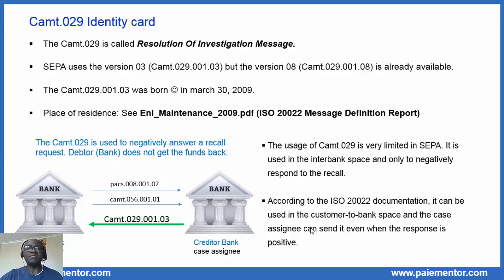In SEPA, the CAM-29 is a message exchanged in the interbank space, either between two banks or between a bank and a clearing system. But as we can see in the ISO 20022 documentation, the CAM-29 message can also be exchanged in the customer-to-bank space. Like the PACS-8, PACS-4 and CAM-56 that we have already seen, the CAM-29 was born on March 30th, 2009 and put into its place of residence the message definition report. The file name is eni-maintenance-2009.pdf. ENI stands for exception and investigations. That file can be downloaded from the ISO 20022 website.